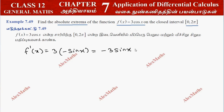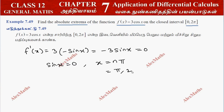Setting f'(x) equal to 0: minus 3sin(x) = 0, so sin(x) = 0. This gives x = nπ, so x = 1π, 2π, 3π, and so on.